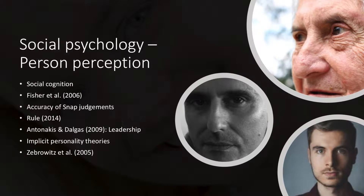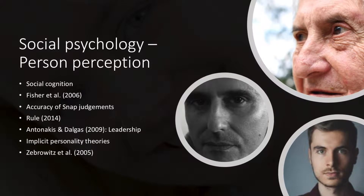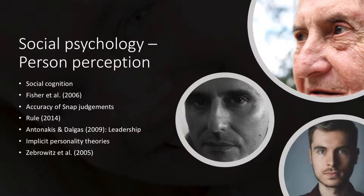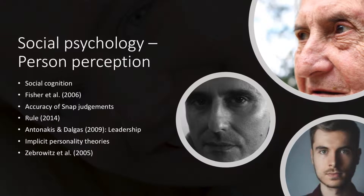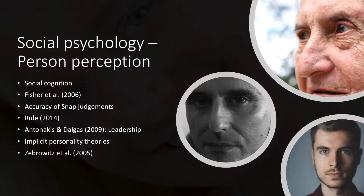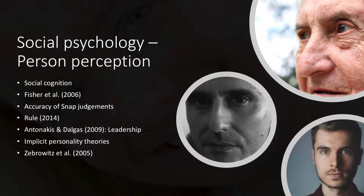Studying person perception can also allow individuals to know the unconscious intentions which may exist. Fisher et al. in 2006 found that men liked beauty and avoided women who were smarter and more ambitious than they were. Women on the other hand liked men who were smarter and more ambitious than they were.